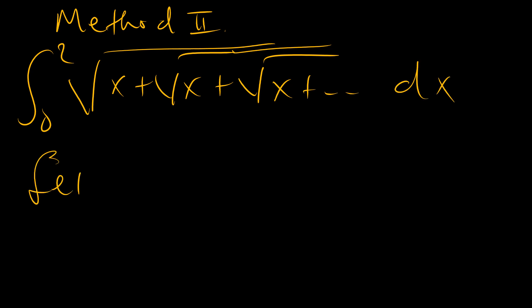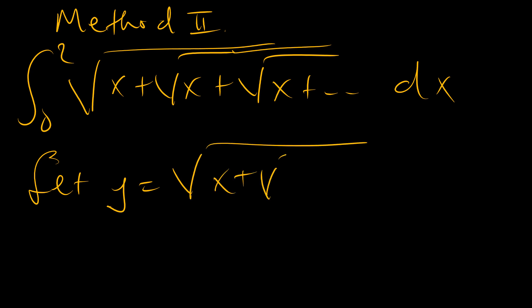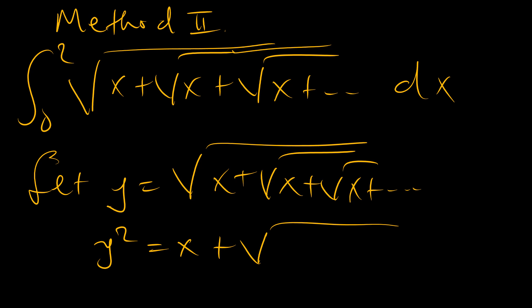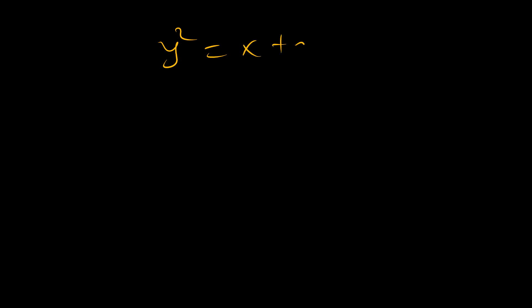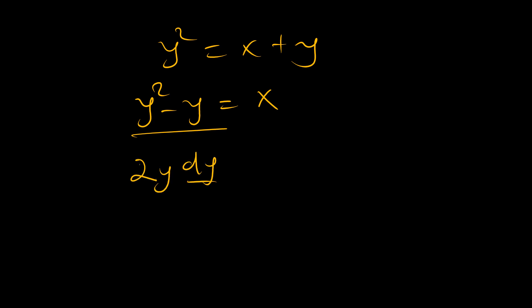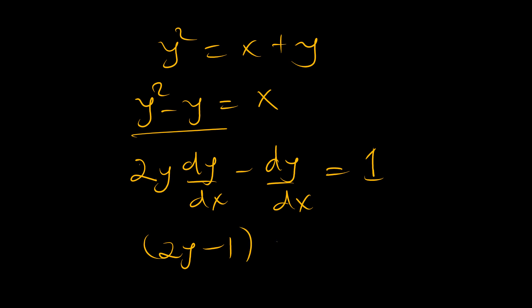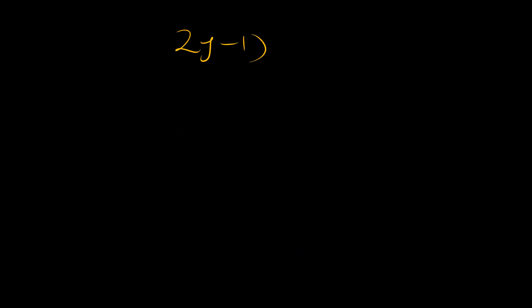For Method 2, we again let y equal x plus square root of x plus x plus, so y squared equals x plus square root of x plus — and this part is again y. So y squared equals x plus y, therefore y squared minus y equals x. Differentiating implicitly: 2y dy/dx minus dy/dx equals 1, so 2y minus 1 dy equals dx. This is an important result.